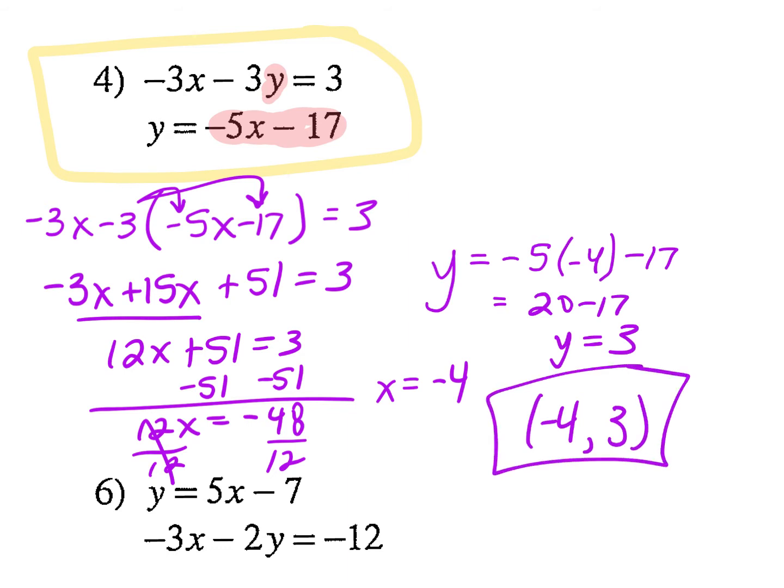Before we move on, let's just mentally check. What's negative 4 times negative 3? 12, right? Minus 3 times 3 is 9. So 12 minus 9 is 3. Is that true? Yes. So we're good to go.